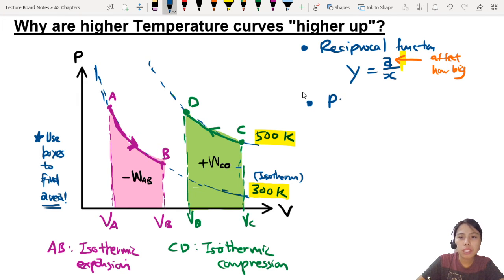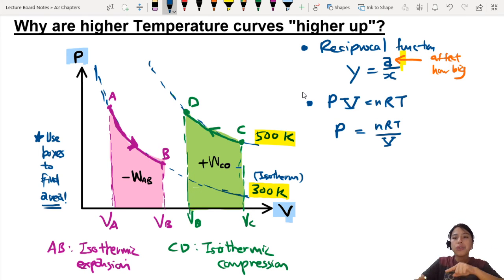Our ideal gas equation is PV equals to nRT, right? Or nKT, depending on which variation. If you want to plot a graph of P against V, I would rearrange this into an equation P equals to nRT over V.